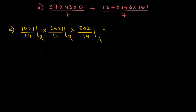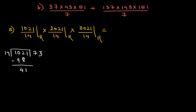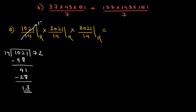Let us divide 1021 by 14. Multiplying 14 by 7 gives 98. Subtracting gives 41. Then 14 times 2 is 28, leaving a remainder of 13. So 1021 divided by 14 gives me 13 as my remainder.